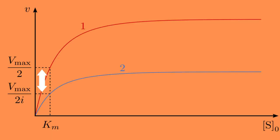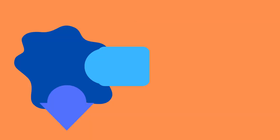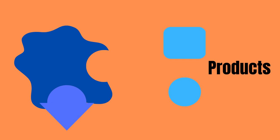As you can see, the value for Vmax decreases, which makes perfect sense considering that the inhibitors prevent the enzymes from producing products.